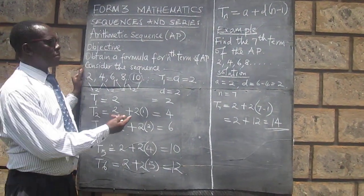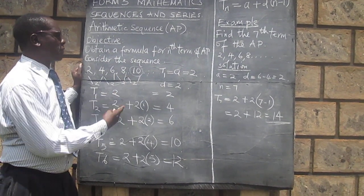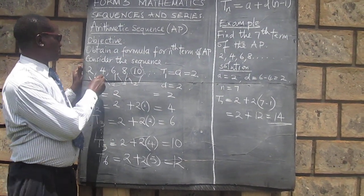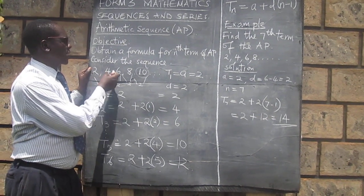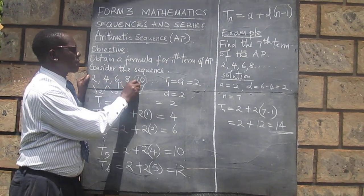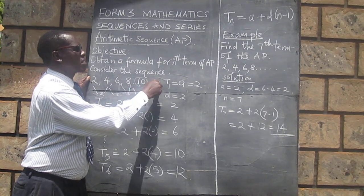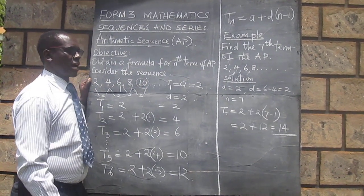So the 7th term in our sequence is going to be 14, and we can confirm that. This is the first, second, third, fourth, fifth, sixth is going to be 12, seventh is going to be 14. And therefore, our formula is giving us the correct or the expected term.